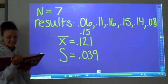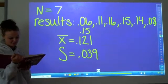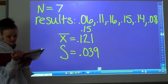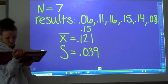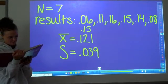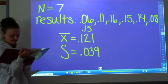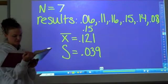In a sample of seven cars, each car was tested for nitrogen oxide emission in grams per mile. And the following results were obtained: .06, .11, .16, .15, .14, .08, and .15 based on the data from the Environmental Protection Agency.